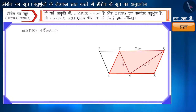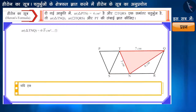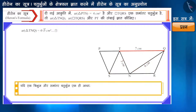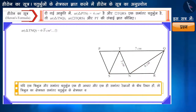दोस्तों, त्रिभुज TNQ और समानांतर चतुर्भुज TQRS को ध्यान से देखिए। यहाँ दोनों एक ही आधार और एक ही समानांतर रेखाओं के बीच स्थित हैं। हम जानते हैं कि यदि एक त्रिभुज और समानांतर चतुर्भुज एक ही आधार और एक ही समानांतर रेखाओं के बीच स्थित हों, तो त्रिभुज का क्षेत्रफल समानांतर चतुर्भुज के क्षेत्रफल का आधा होता है।